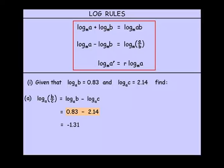Part B: we're asked to find the log of BC to the power of 3. Firstly, we're going to use this rule because we have an indice there, that 3. The BC to the power of 3, that 3 we can write at the front.